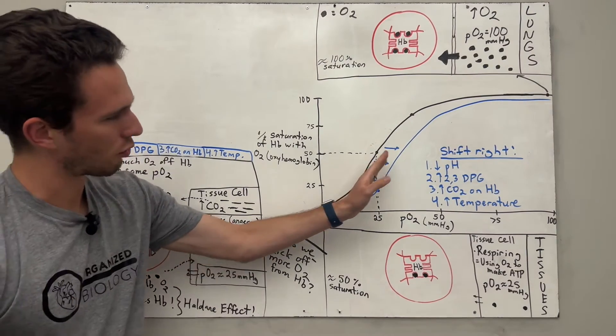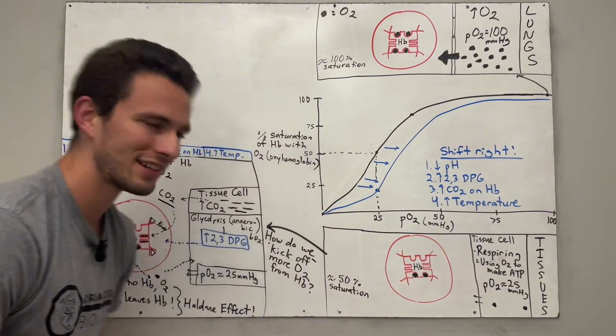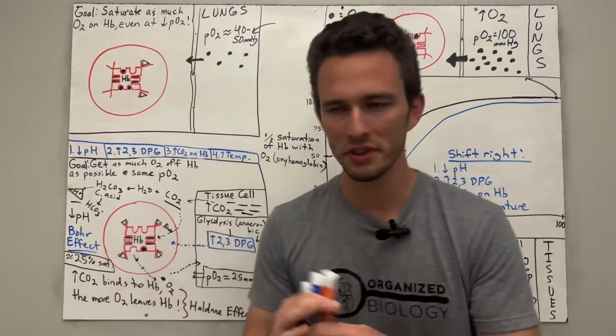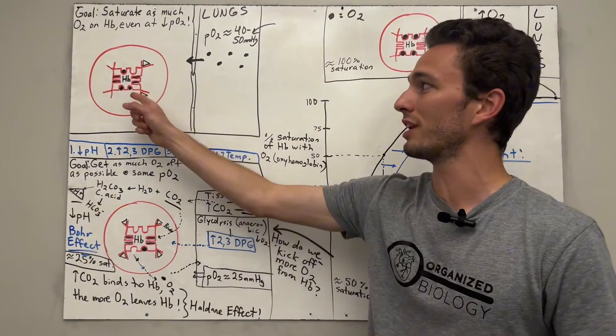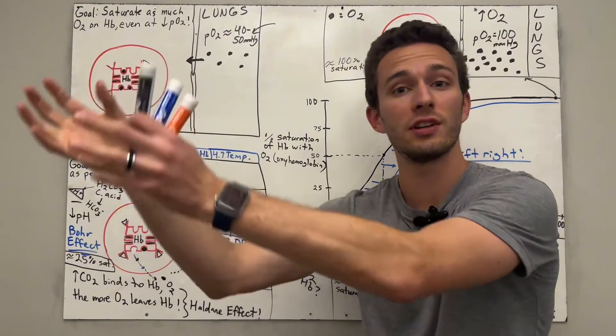So that is how the graph correlates with the actual functioning at the tissues with the hemoglobin molecule and oxygen. Well, that's how the graph shifts right. But don't you know that the graph can shift left? Well, let's see what that looks like next. Okay, so now we're at the lungs, y'all. And the goal with the lungs, remember, is to try and saturate as much of the hemoglobin as possible because it'll pick it up and then deliver it to the tissues.